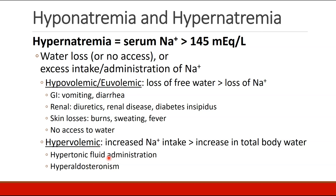So we've discussed hyponatremia. Now we're going to discuss the opposite, which is hypernatremia — when serum sodium is greater than 145 milliequivalents per liter. This occurs when patients have loss of water or no access to free water, or if they have excess intake or administration of sodium. Once again, we see two subcategories: hypovolemic hypernatremia, where patients have lost free water in excess of their sodium losses.